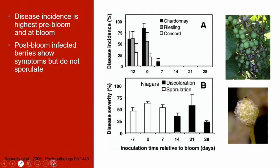Research has consistently shown that clusters are most susceptible one to two weeks pre-bloom to three to five weeks post-bloom, depending on the cultivar. In the study shown here, clusters were inoculated at different time intervals relative to the date of bloom, represented as day zero. In the top graph, disease incidence was calculated as the percentage of clusters with symptomatic berries. Vines inoculated 12 days pre-bloom or at bloom had more diseased clusters than those inoculated seven or more days post-bloom. Only on Chardonnay was there some disease at about seven days post-bloom.